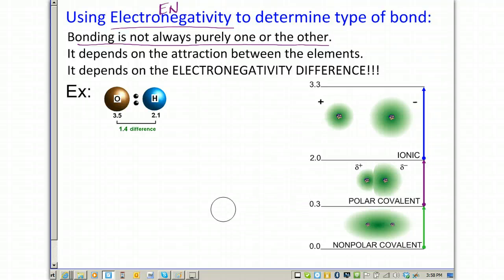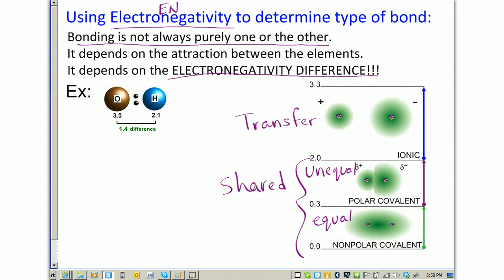Ionic, if you recall, means that electrons get transferred. Covalent, which is going to be from here to here, is where electrons are shared. If it's polar covalent, they are unequally shared. And if it's non-polar covalent, then they are equally shared. And so, we have to look at what the difference is between electronegativities to determine whether or not it falls in the category of ionic, polar covalent, or non-polar covalent.